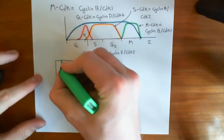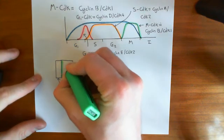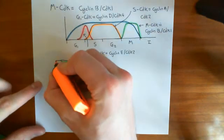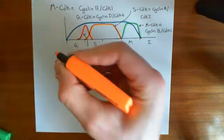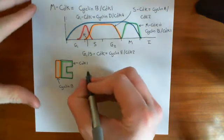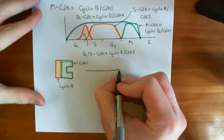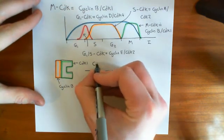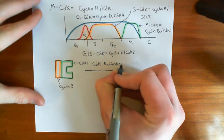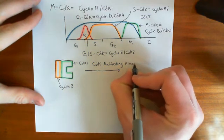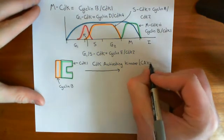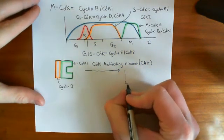In order to activate cyclin-B CDK1, it also needs an activatory phosphate group added onto it. There is an enzyme which adds this activatory phosphate group, known as the CDK-activating kinase, or CAK for short. This kinase enzyme adds an activatory phosphate group onto the CDK1 enzyme.